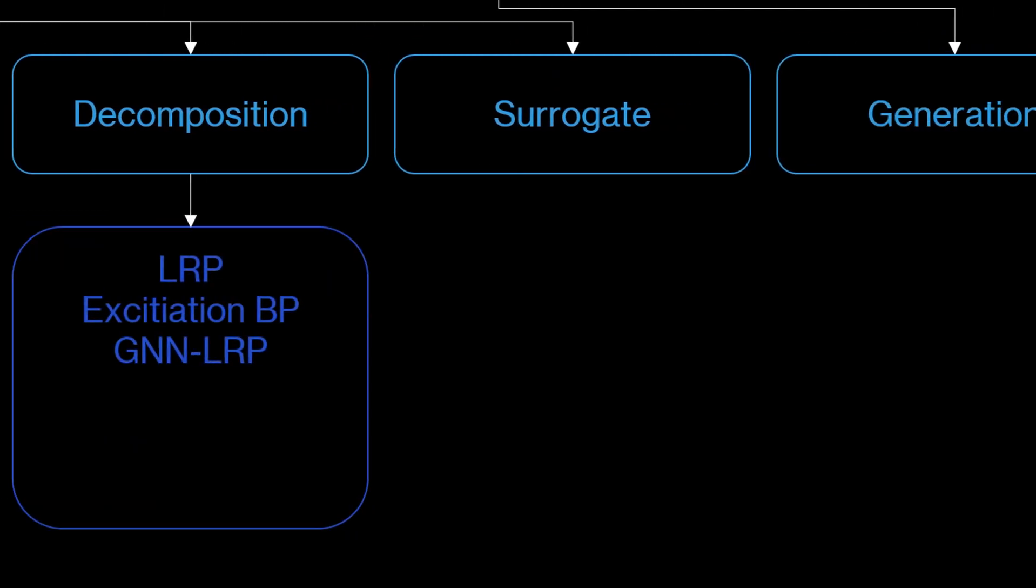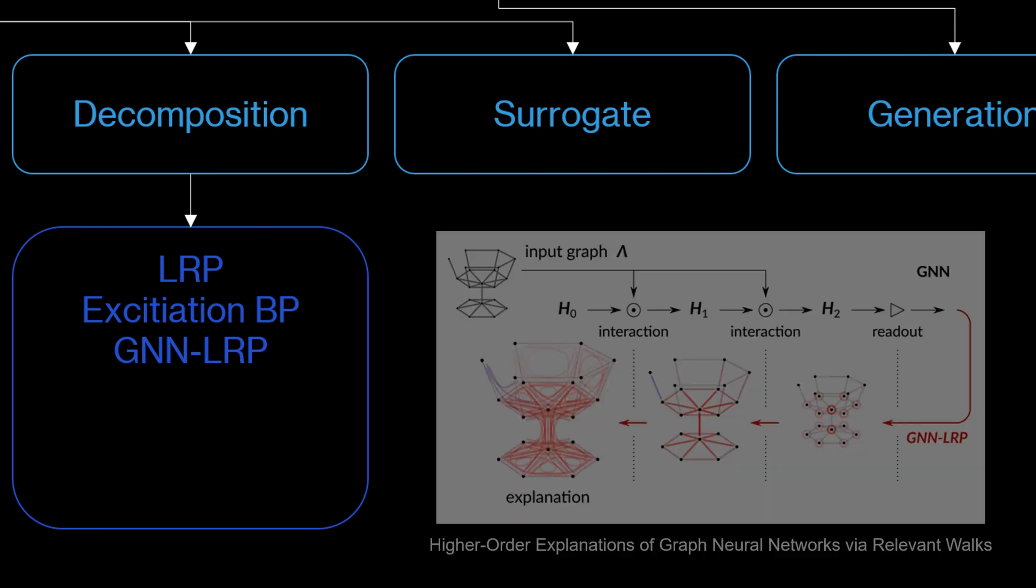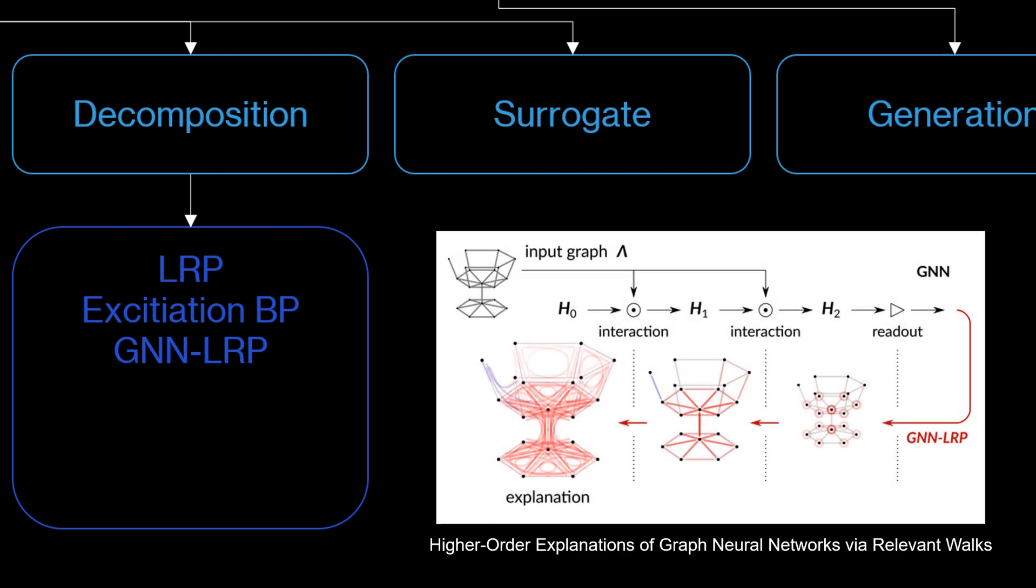Decomposition methods decompose the prediction into the input space. This means layer by layer the output is transferred back until the input layer is reached. The values then indicate which of the inputs had the highest impact on the output. A popular method in this field is called layer-wise relevance propagation or short LRP which is based on Taylor decomposition. The graph variant of it GNN LRP uses so-called relevant walks on the graph to identify the areas with a high contribution.